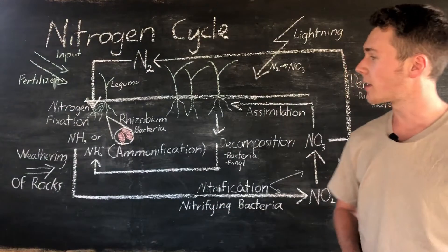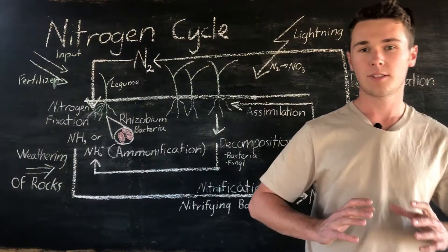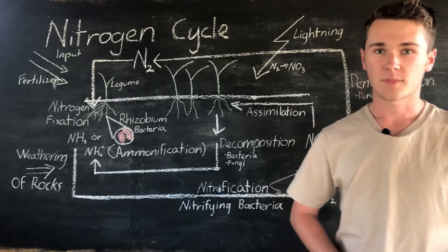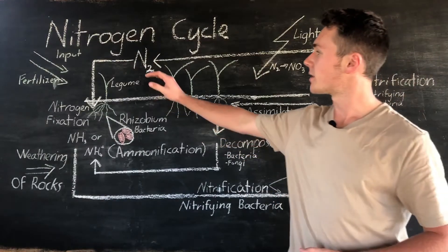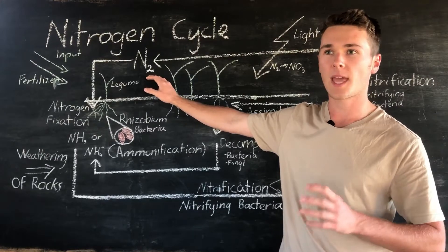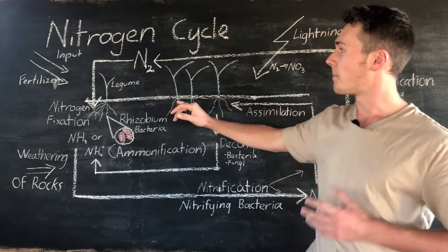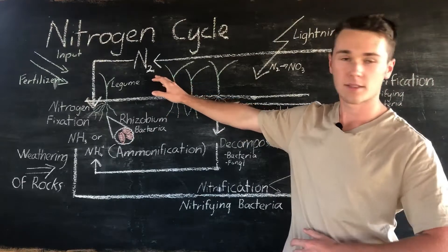So the easiest way to understand the nitrogen cycle is just to follow nitrogen around the system. The easiest place to start is nitrogen gas in our atmosphere, which makes up about 80% of our atmosphere and it's two nitrogens bonded together to form this molecule.